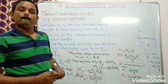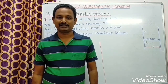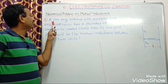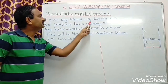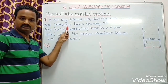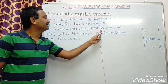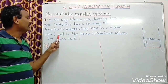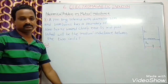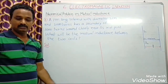That's about mutual inductance of two long coaxial solenoids. Now we will do a numerical on mutual inductance. A 1 meter long solenoid with diameter 2 cm and 2000 turns has a secondary of 1000 turns wound closely near its midpoint. What will be the mutual inductance between the two coaxial solenoids?